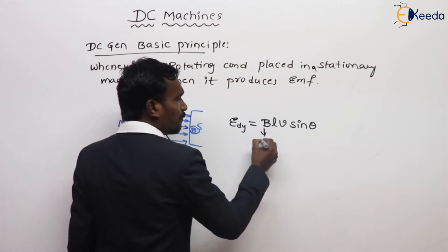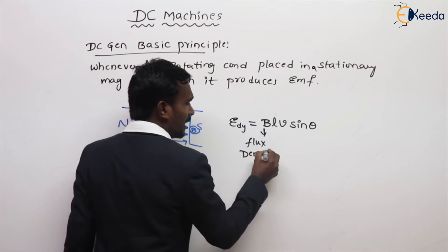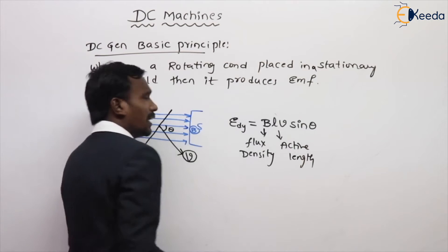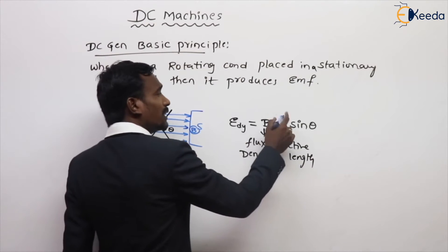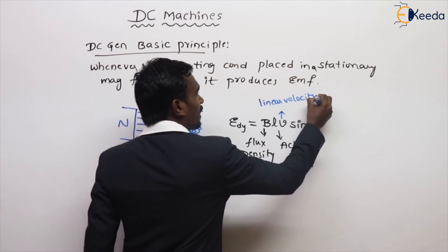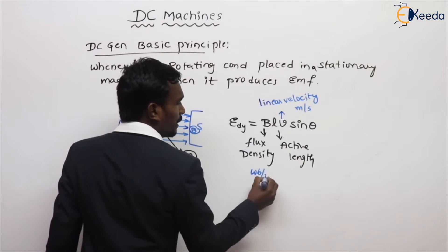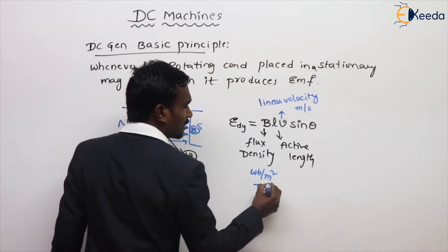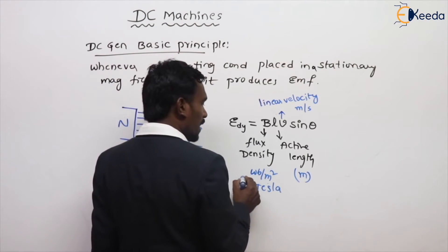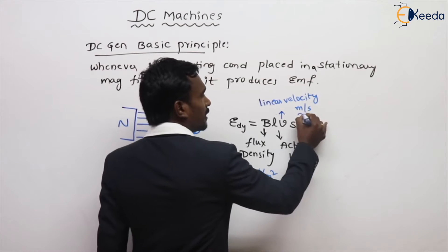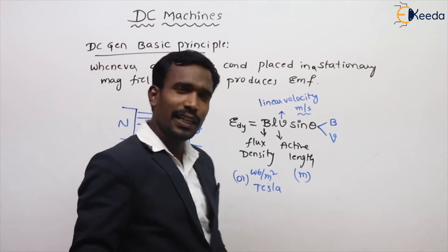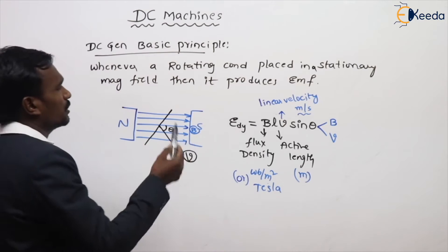Where B is the flux density in Weber per meter squared, or Tesla. L is the active length of the conductor in meters. V is the linear velocity of the conductor in meters per second. And theta is the angle between flux density and linear velocity. This is simply the EMF induced in the conductor.